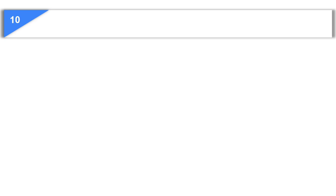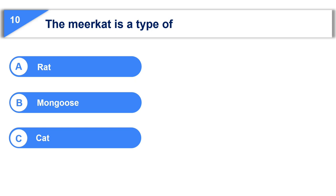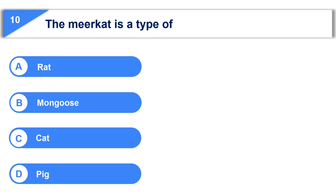Now let us see the next question. The meerkat is a type of — option A, rat. Option B, mongoose. Option C, cat. Option D, pig.